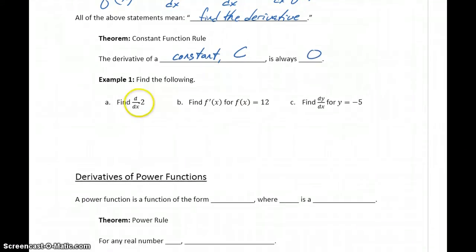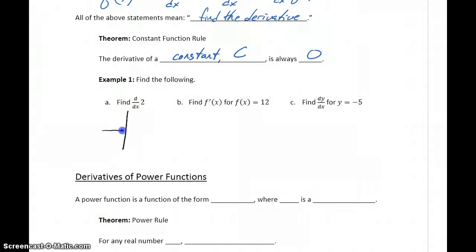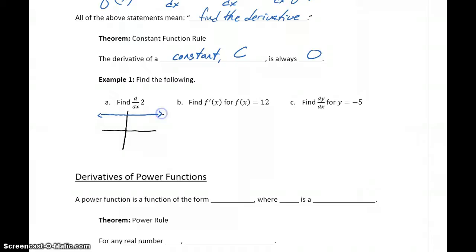So in each of the following examples, we want to find the derivative of 2, find the derivative of 12, and find the derivative of negative 5, each expressed with slightly different notation. In each of these examples, we're looking at the equation — in this case y equals 2 — which would be a horizontal line passing through y equals 2.